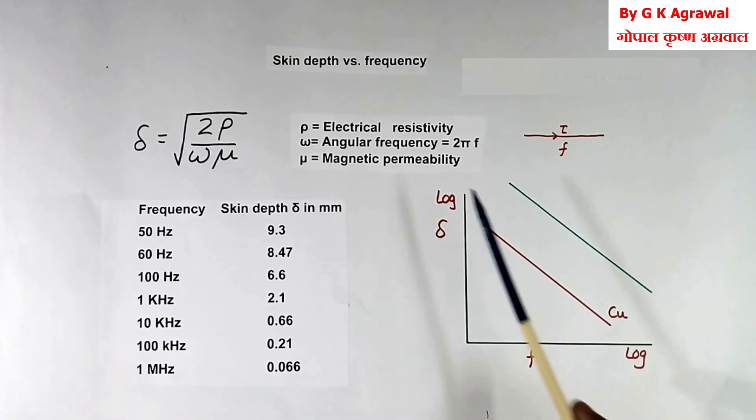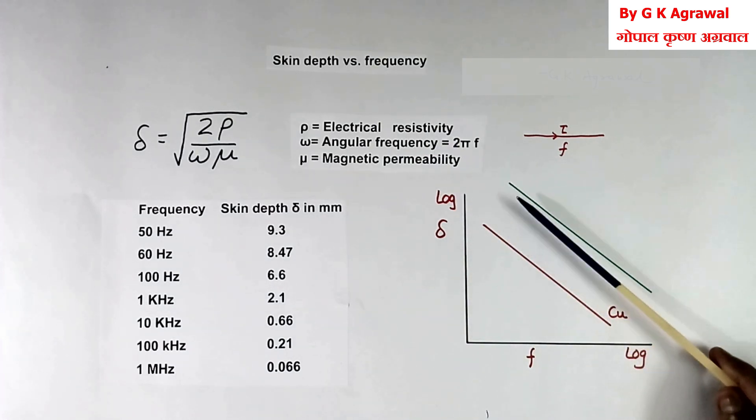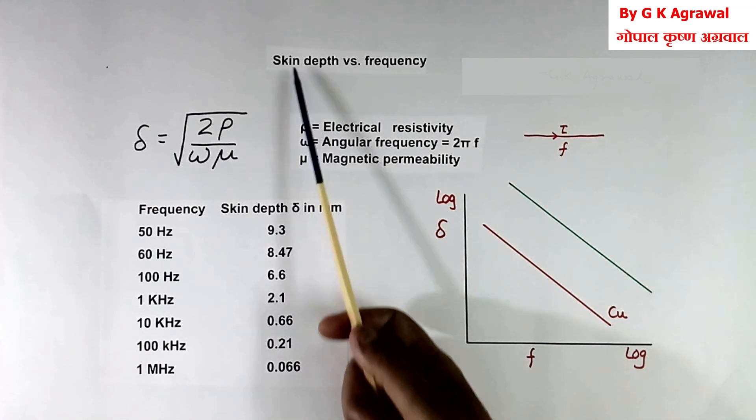Depending on material, resistivity value will be different. So different line will come. And because of this, resistance of the wire will be very high. This is due to skin effect.